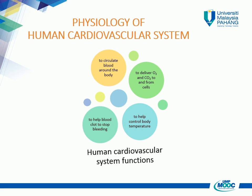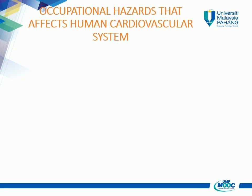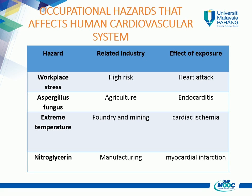The functions of the human cardiovascular system are: to circulate blood around the body; to deliver oxygen and carbon dioxide to and from cells; to help blood clot to stop bleeding; and to help control body temperature. The cardiovascular system can be affected by several occupational hazards, such as workplace stress, Aspergillus fungus, extreme temperature, and nitroglycerin, which can cause myocardial infarction.